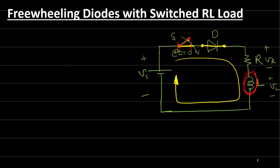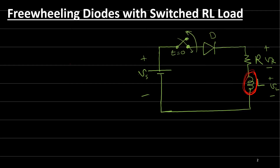We have current here in this inductor and this current must be dissipated somewhere when we open the circuit — when we switch off the transistor or the switch. So what we need to do is to add something we call a freewheeling diode. The job of this freewheeling diode is to take the current from the inductor and provide another path to dissipate this current or this energy inside the resistor.